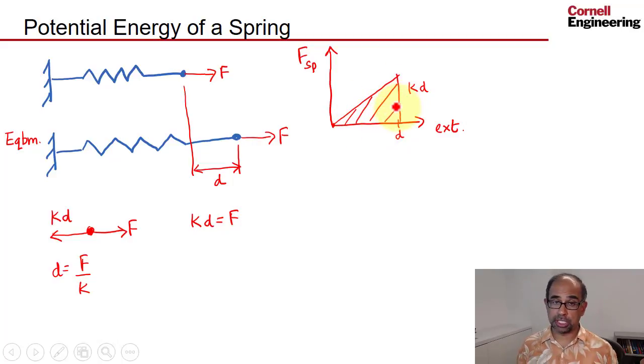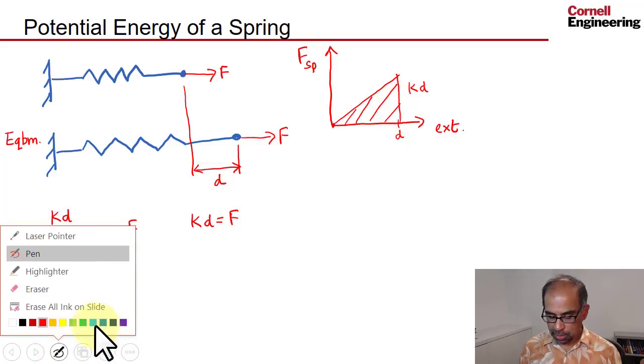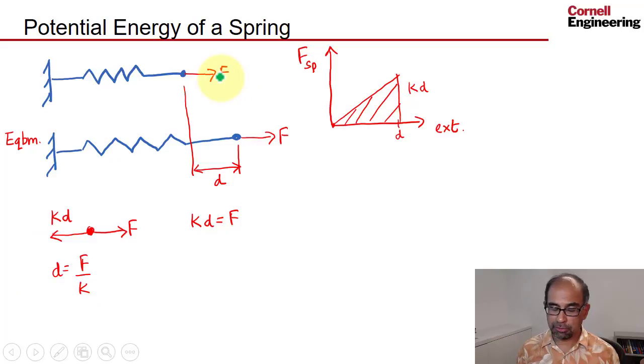That's related to the potential energy of the spring. So you would have to look at this area, and that gives you the potential energy stored in the spring. But that's not the whole story. You have to look at the external force. The external force has moved in the direction in which it's applied, and so there's a loss of potential energy because the external force has done work on the spring.